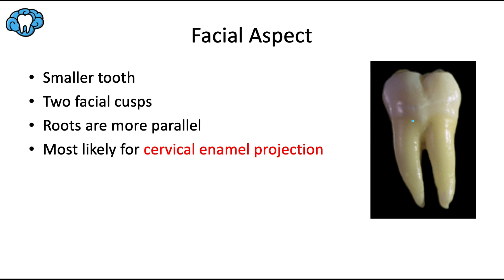This is similar to what we saw in the maxillary second molar, where it was also smaller with more convergent roots than the maxillary first molar. Like the mandibular first molar, there is a facial groove present and in line with the furcation, but unlike the mandibular first molar there's only one facial groove this time — there is no distal facial groove because there is no distal cusp. This is also the tooth most likely to have a cervical enamel projection, which you can argue is actually present in this photograph, where the enamel dips down into the furcation area.